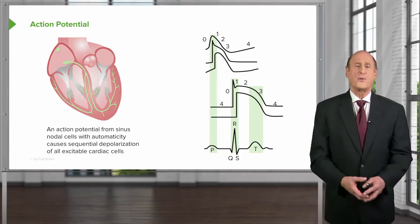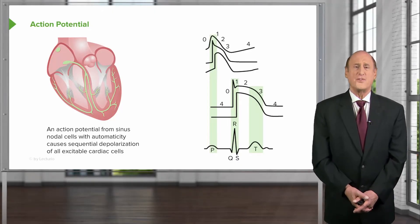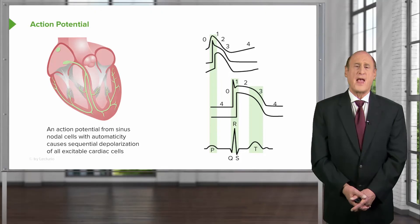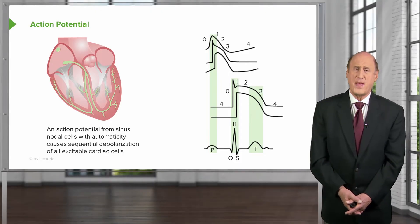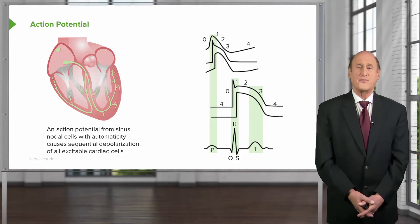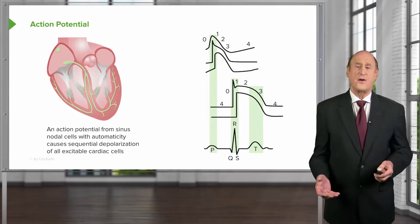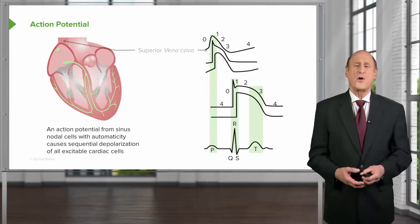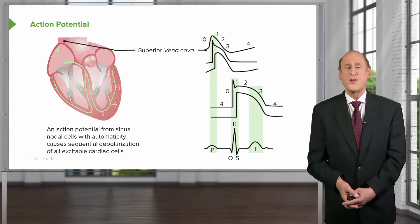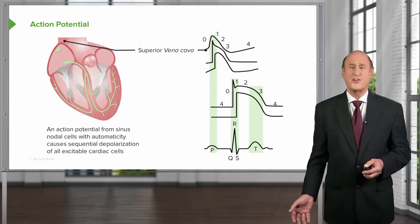And then the wave of depolarization passes down past the AV node into the Hiss-Purkinje system and throughout the ventricle, passing down first the septum to the apex and then backwards to the base of the heart. And when that happens, it triggers contraction and the ventricle squeezes. And here you see a whole series of action potentials for the different myocardial cells as the wave of depolarization passes down.